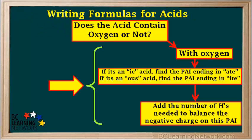To summarize: if it's an acid that contains oxygen, it will have a polyatomic ion, so look at the ending on its name. If it ends in -ic, find a polyatomic ion with a similar name ending in -ate. If it ends in -ous, find a polyatomic ion with a similar name ending in -ite. Finally, add the number of hydrogens required to balance the negative charge on the polyatomic ion and create the final formula.